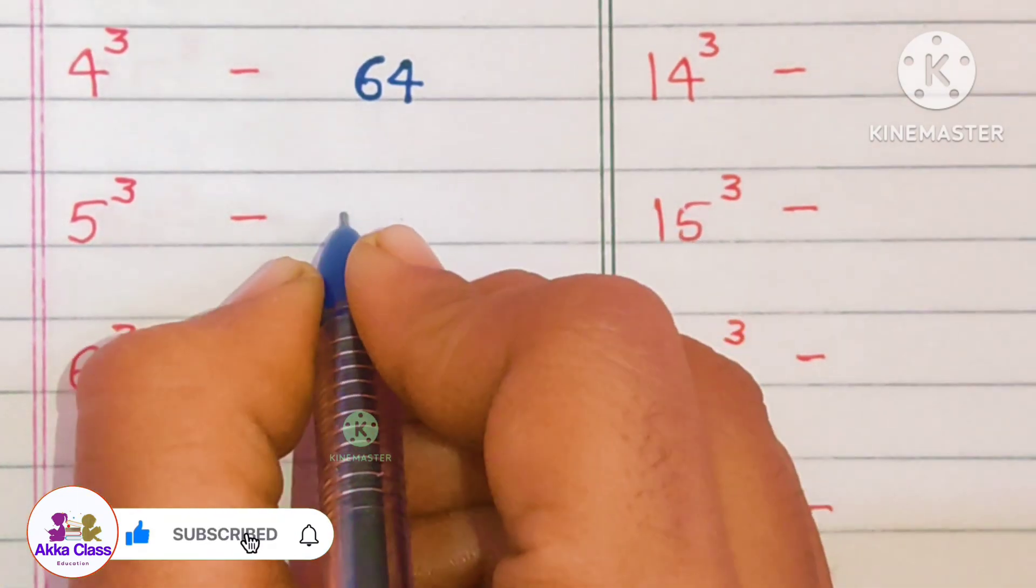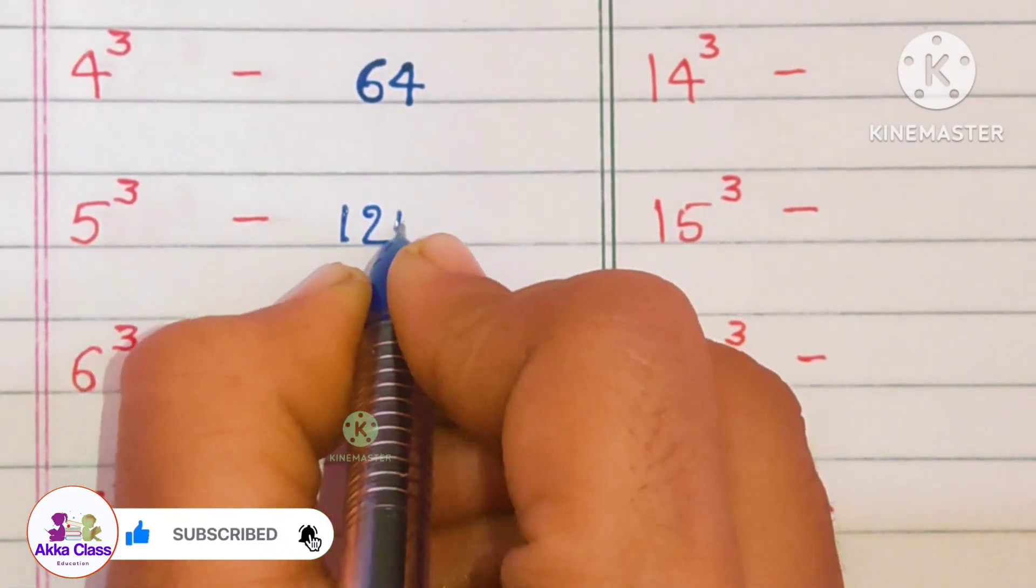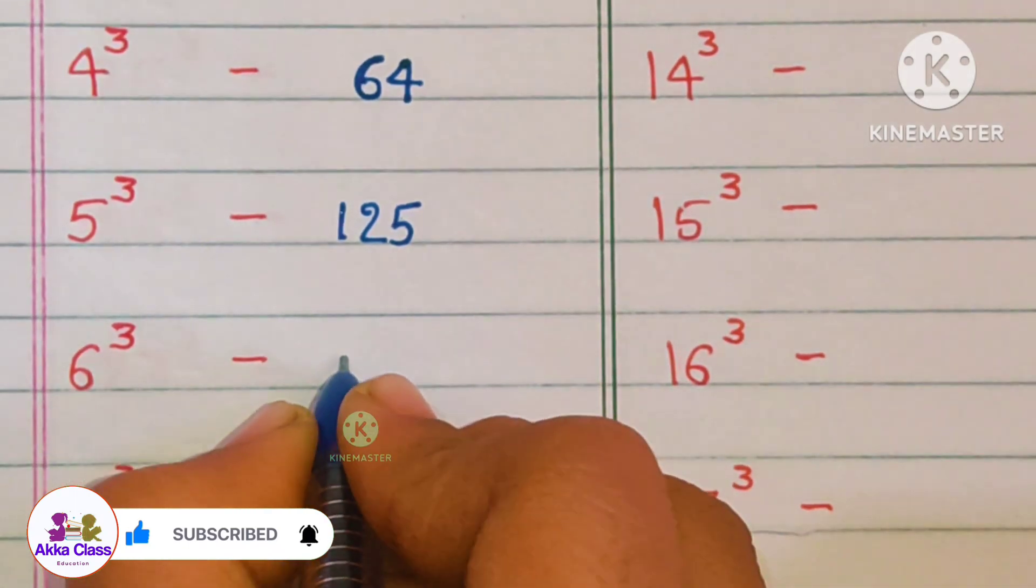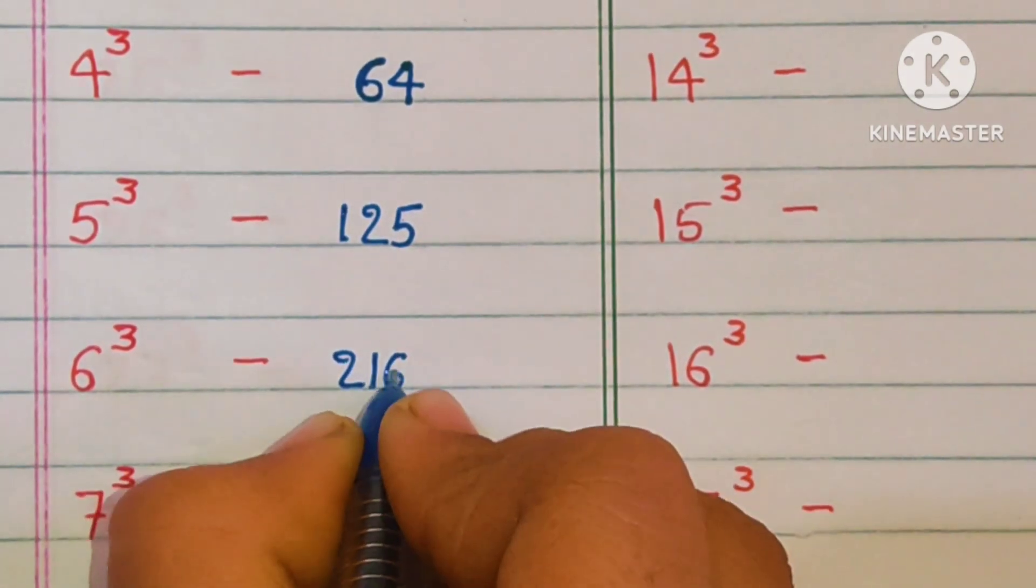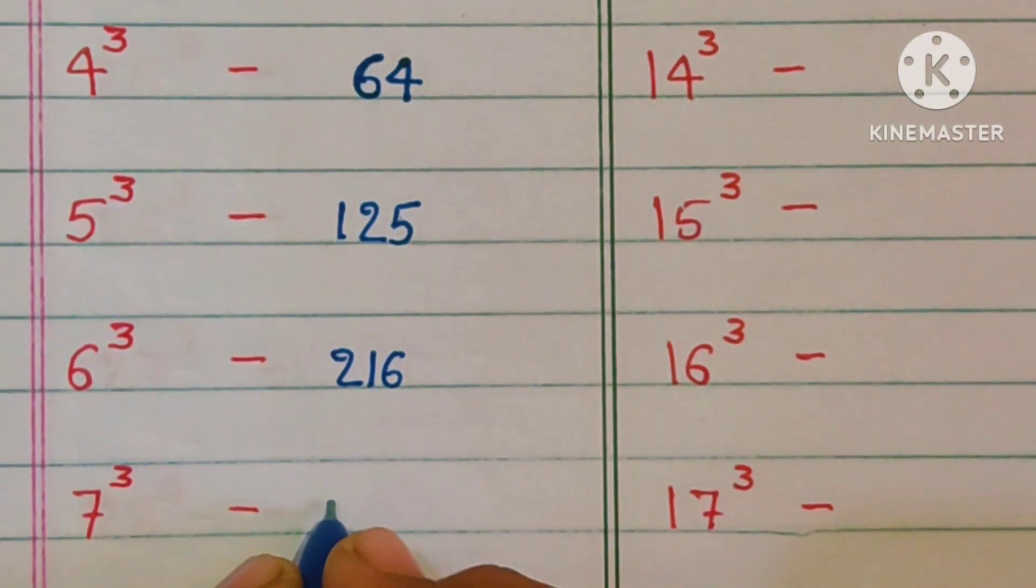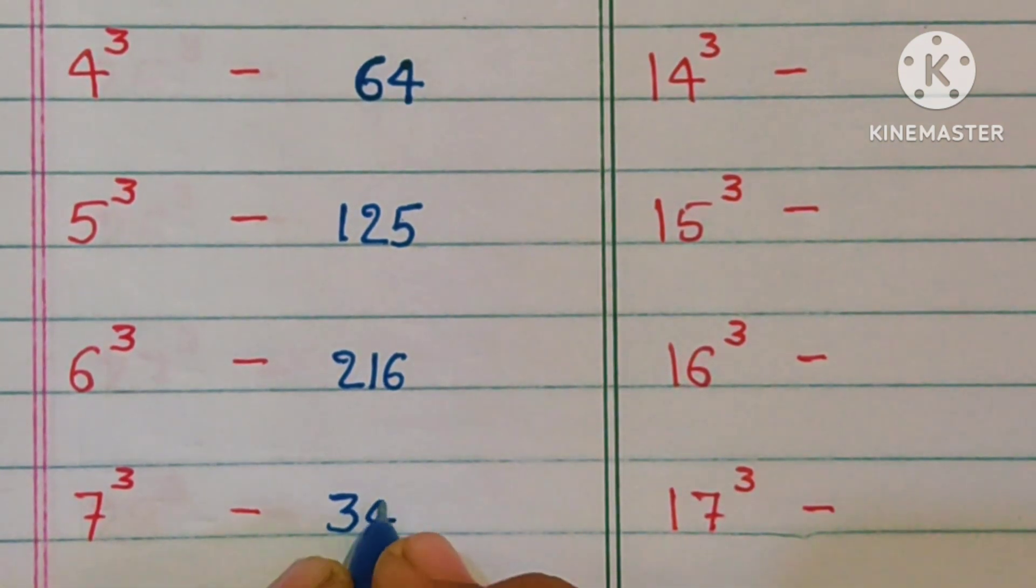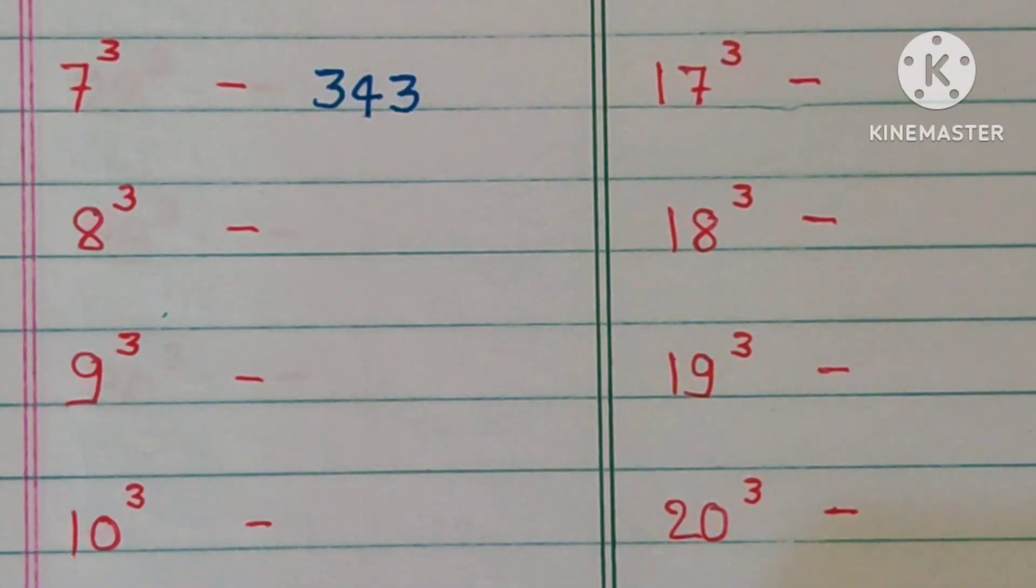5 cube is 125, 6 cube is 216, 7 cube is 343.